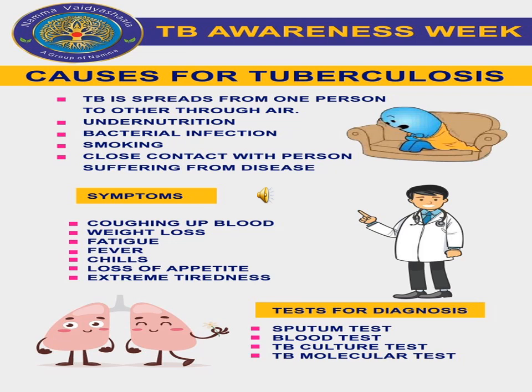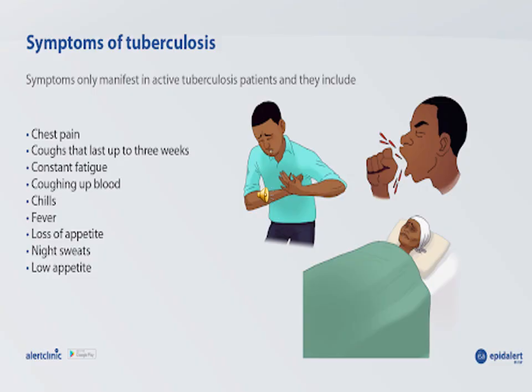Tuberculosis is mainly a disease of the poor. Symptoms include hemoptysis, weight loss, night sweats, loss of appetite, and extreme tiredness. Diagnostic tests include sputum tests, blood culture tests, TB culture tests, and molecular TB tests. Symptoms also include chest pain, coughing with blood, chills, fever, and low appetite.